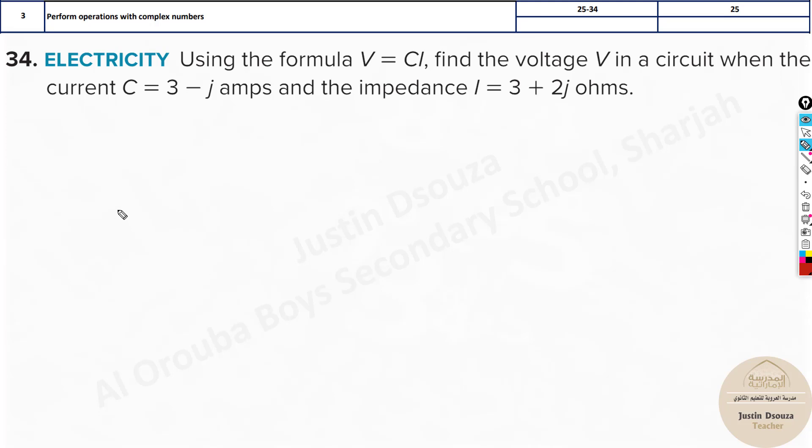Now all you need to do is multiply: 3 minus i times 3 plus 2i. Do the FOIL method. 3 times 3 is 9, plus 6i, minus 3i, and lastly minus 2i squared. Here simplified.